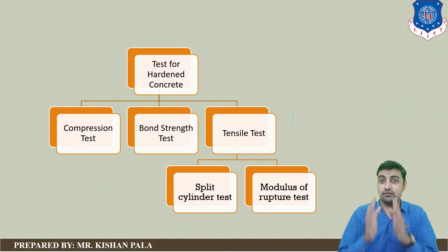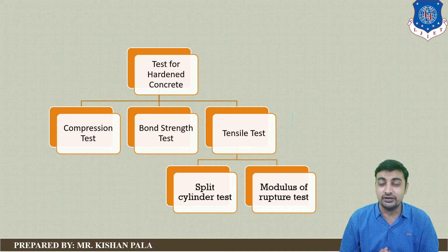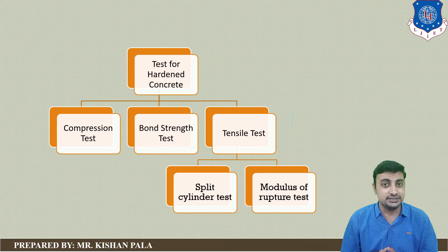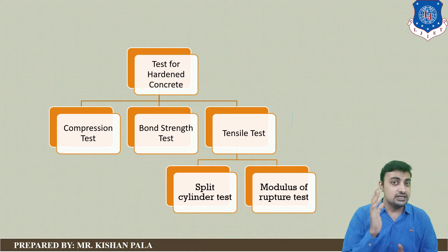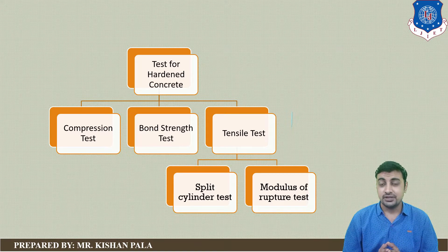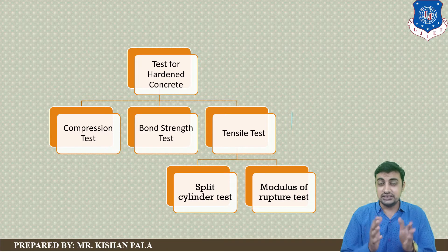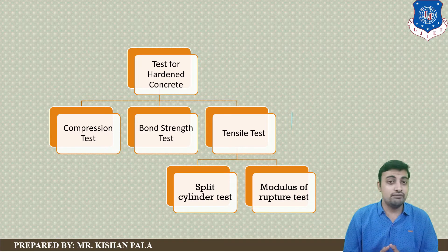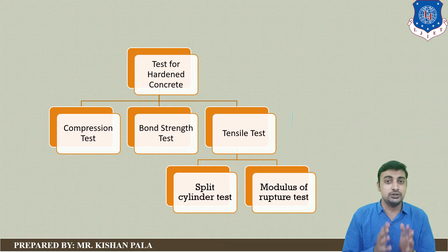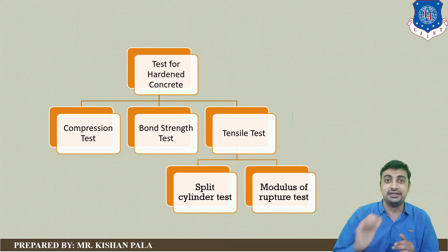For finding the tensile strength of the concrete mass, we have two types of tests: the split tensile test and the modulus of rupture. In this session, we will find the tensile strength of the concrete using the split tensile test.